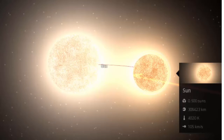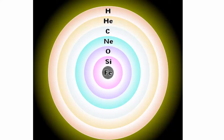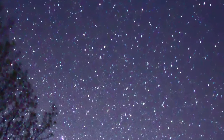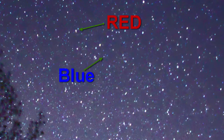Stars with at least half of the mass of the sun can also begin to generate energy through the fusion of helium at its core. Whereas more massive stars can fuse heavier elements along a series of concentric shells. From Earth at night, these points of light look white, but there's a range of colors in which a star can exist.